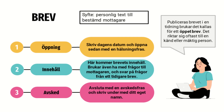Brevet är inte alls en komplicerad texttyp – det är en personlig text som du skriver till en bestämd mottagare. Det du behöver ha koll på är att ha med alla detaljer som ska finnas i ett brev: hälsningsfras, avskedsfras, datum och liknande. Dessa är viktiga för att undvika onödiga småfel som kan sänka betyget. Du börjar med din öppning: skriv dagens datum och öppna med en hälsningsfras – det kan bara vara ett vanligt hej. Sedan kommer brevets innehåll, ofta med frågor till mottagaren eller svar på frågor från ett tidigare brev. Du avslutar med en avskedsfras och skriver under med ditt eget namn.